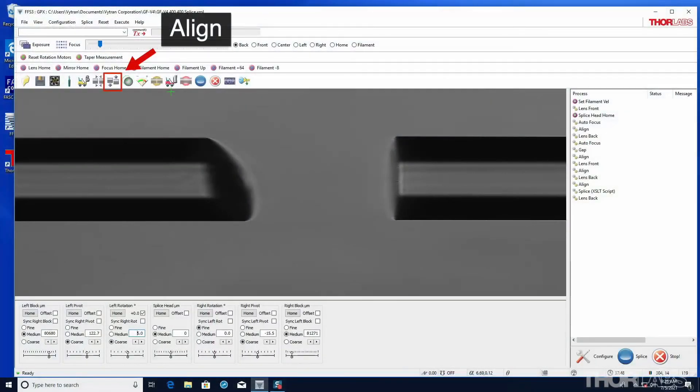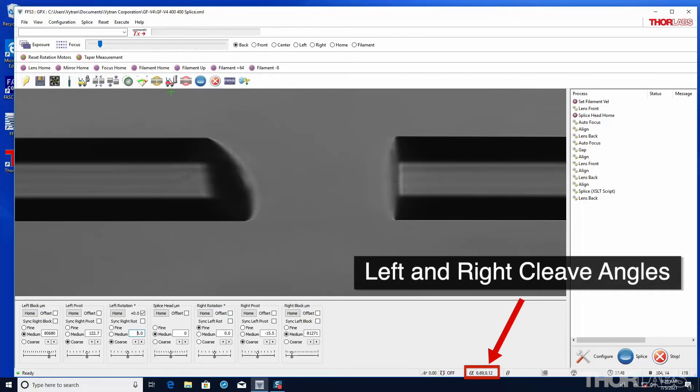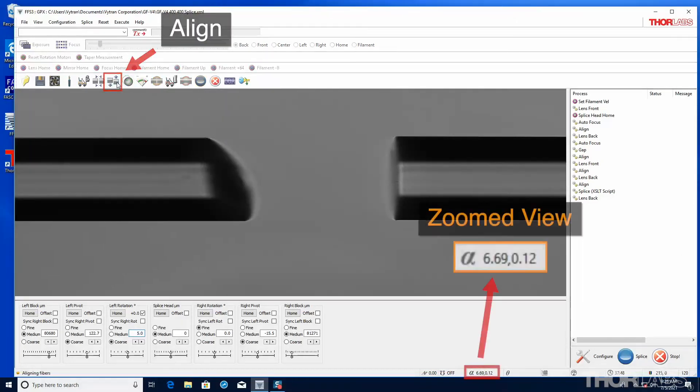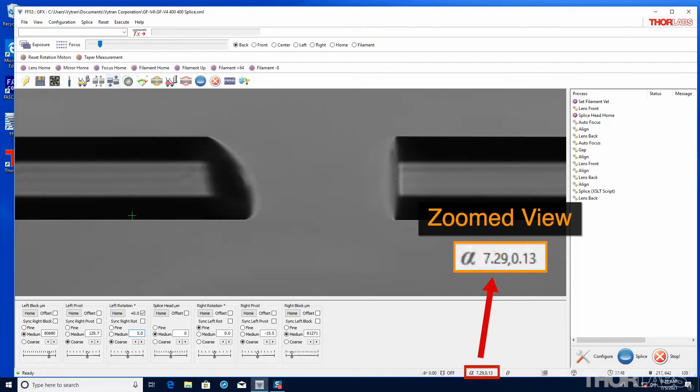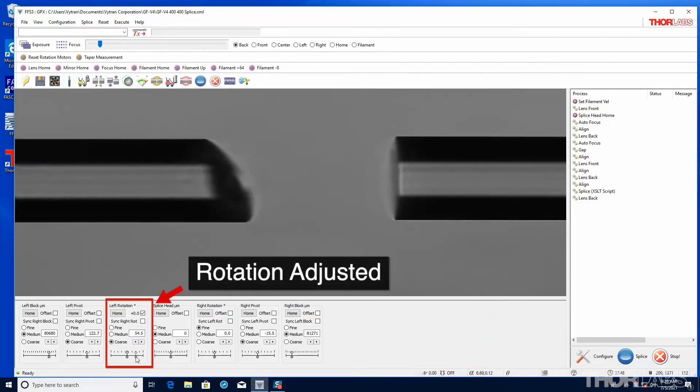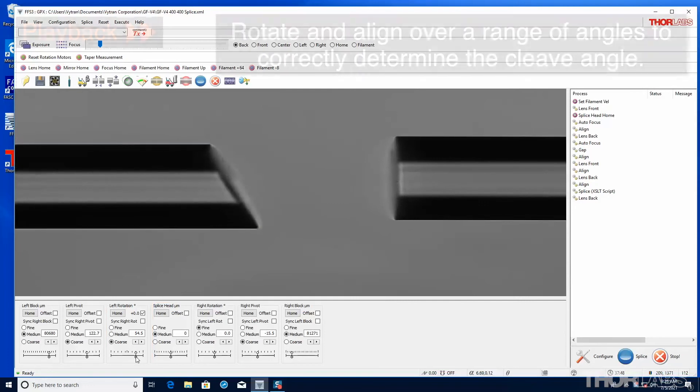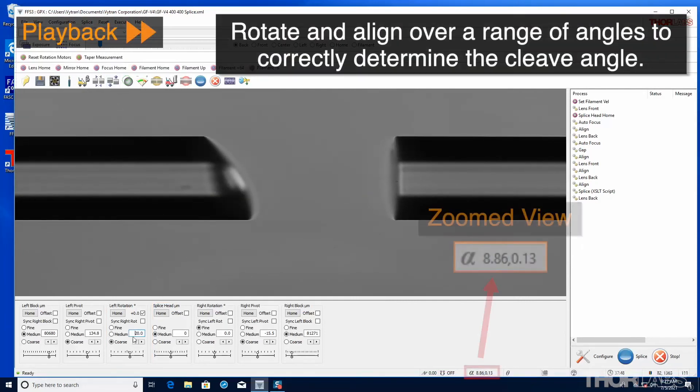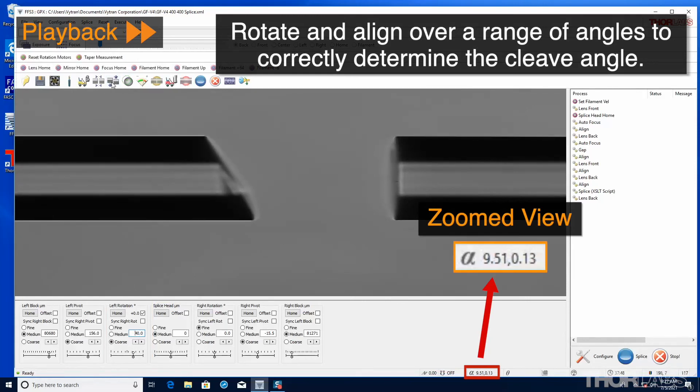Whenever two fibers are aligned in side view, the FFS3 software uses the camera image to estimate the cleave angles of the left and right fibers. The results are displayed in the status bar. As the fibers rotation affects the angle seen on screen, the fiber holding block holding the cleaved fiber should be rotated to ensure that the camera image shows the largest angle possible on screen.